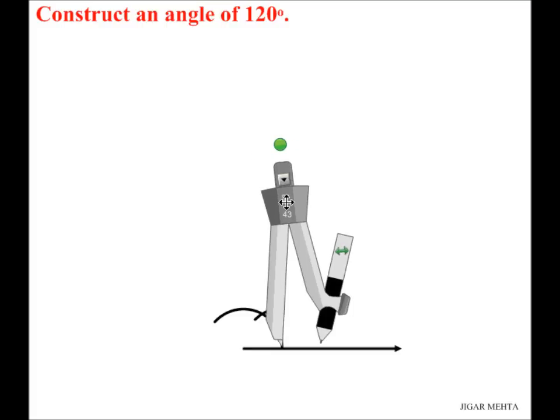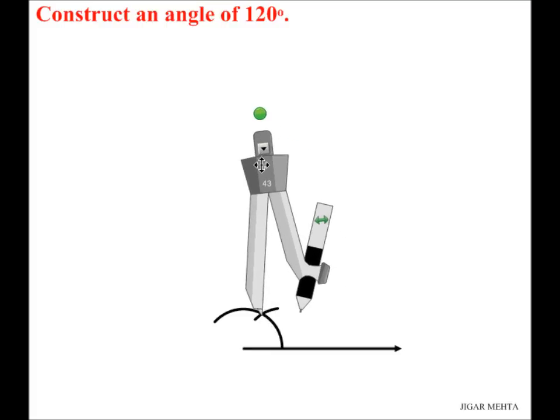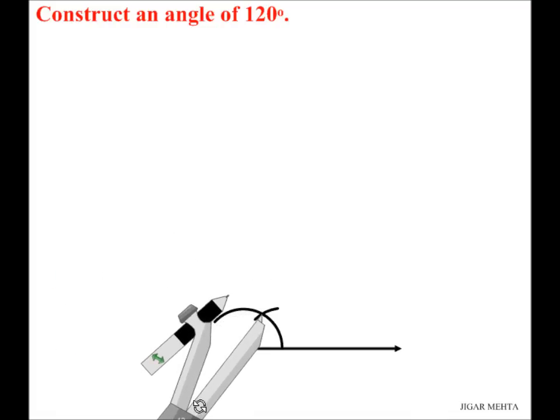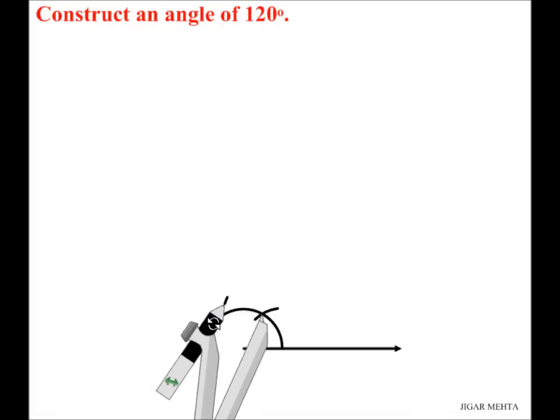Again, I'm going to move my pointer here to this place and turn my compass and draw another arc, another small arc. This gives us an angle of 120 degrees.